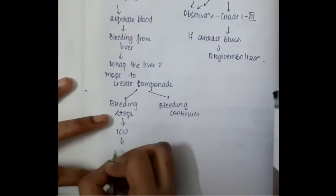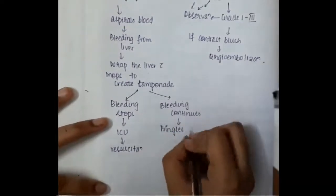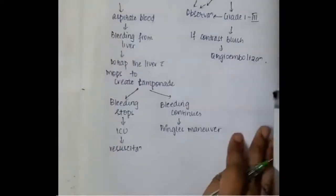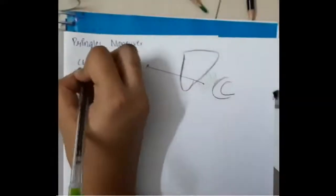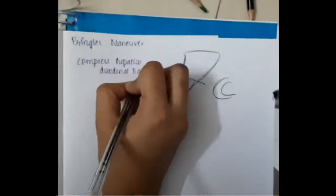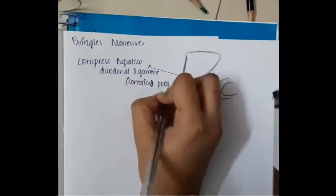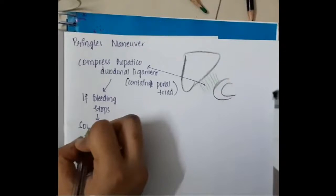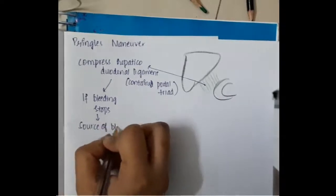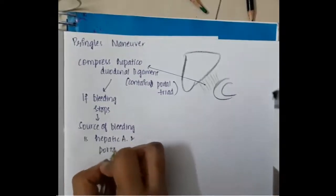If the bleeding stops, send the patient to ICU for resuscitation. If the bleeding continues, we should do Pringle's manoeuvre. In Pringle's manoeuvre, we compress the hepaticoduodenal ligament with a clamp. This ligament contains the portal triad, so compressing it also compresses the portal triad.